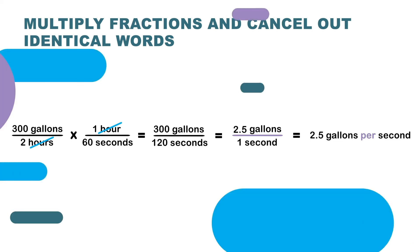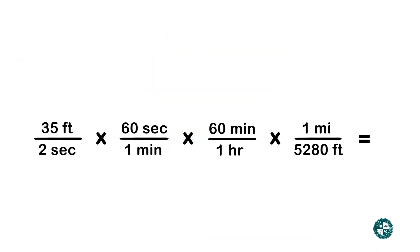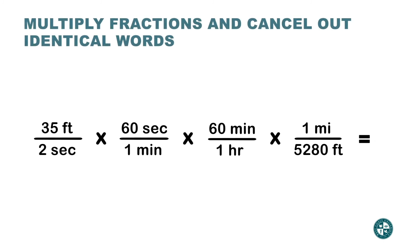Now let's multiply these four rates. Don't forget the tip — cross cancel the words first. Can I cancel the word 'feet'? Yes — this one on top with this one on the bottom. Can I cancel 'second'? Yes — this one on the bottom with this one on the top. Can I cancel any other word? Yes — minutes and minutes. And that's it.